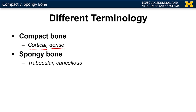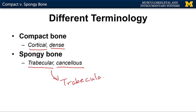In terms of spongy bone, you may hear the terms trabecular or cancellous. I will often use the term trabecular because this type of bone is composed of trabeculae — these tiny spicules or tiny spines of bone.